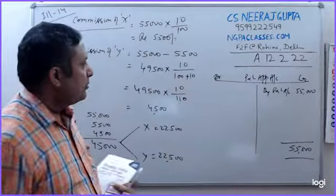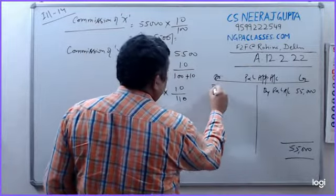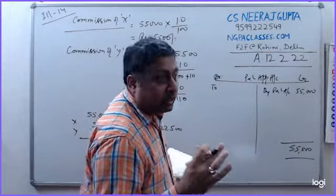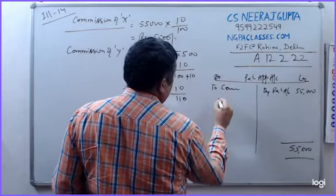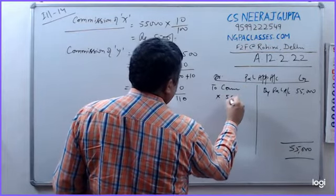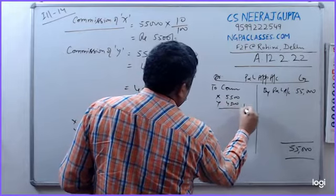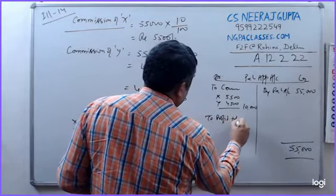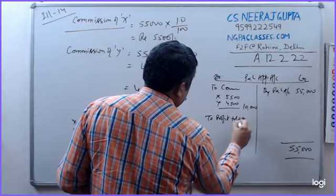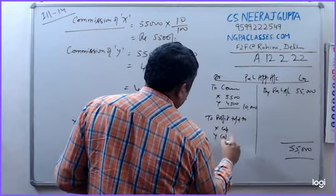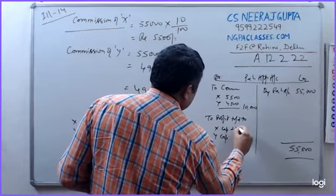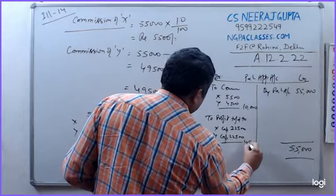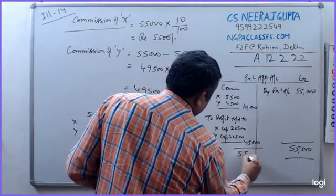There are items on the debit side - salary, reserve, commission. So commission X is 5,500 and Y is 4,500, totaling 10,000. Now the profit transfer to X capital and Y capital, which I am left with, is 22,500 each, that's 45,000. Total 55,000.